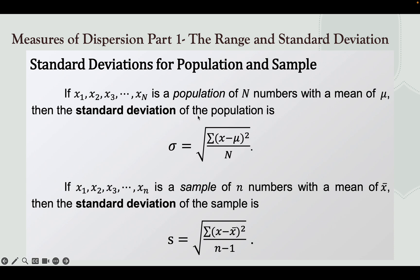then the Standard Deviation of the population σ equals the square root of the summation of the squared deviations over n. And if x₁, x₂, x₃ until xₙ is a sample of n numbers with a mean, then the Standard Deviation of the sample s equals the square root of the summation of the squared deviations over n minus 1.